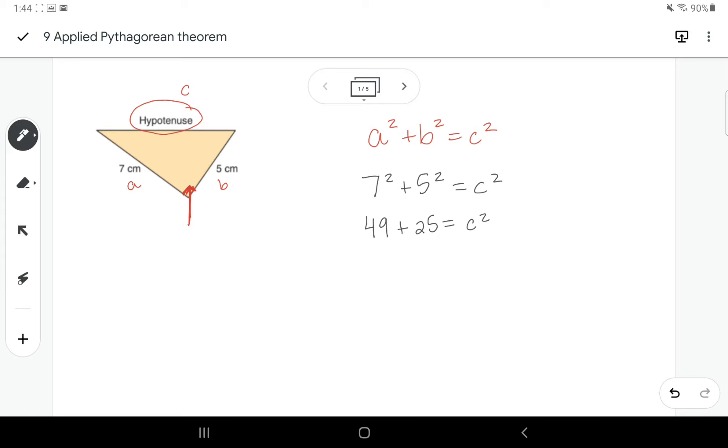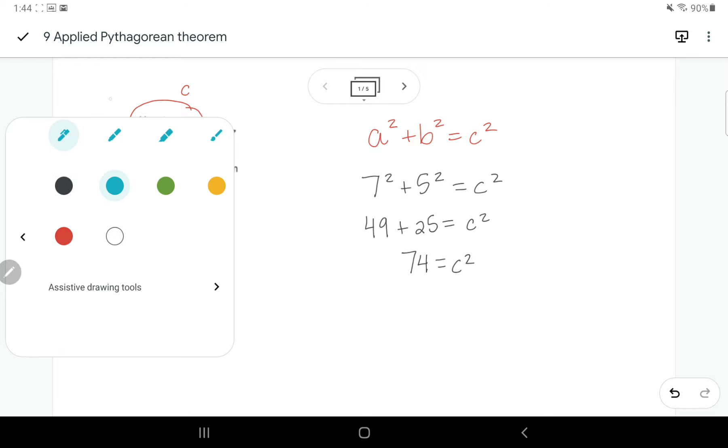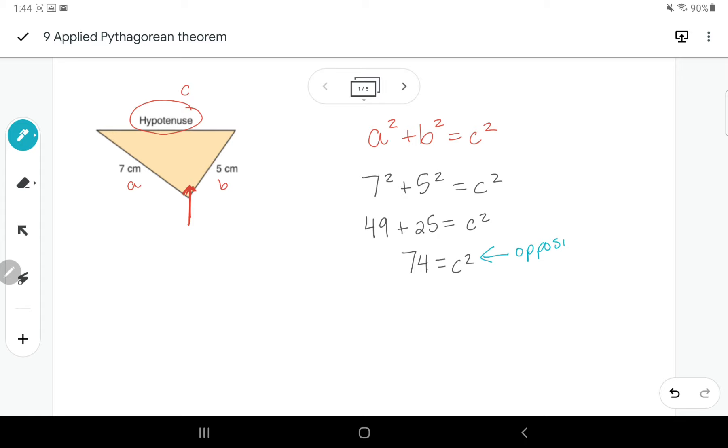So then adding those up, I get 74 equals C squared. Now to get what the C value is, the opposite operation is a square root.